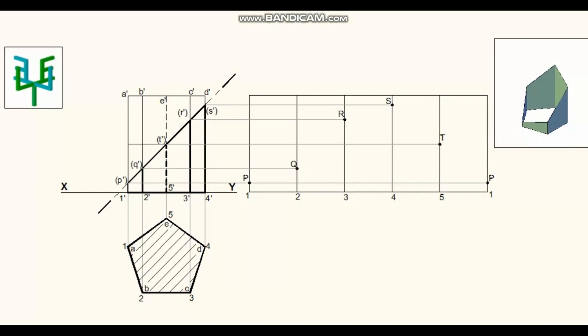Join points P, Q, R, S, T, P with straight dark lines. Darken the base and all the vertical edges of the development. Show the dimensions.